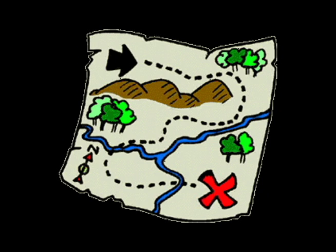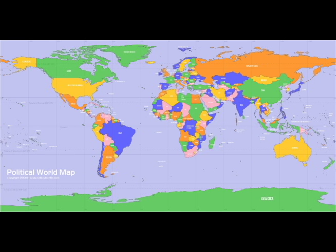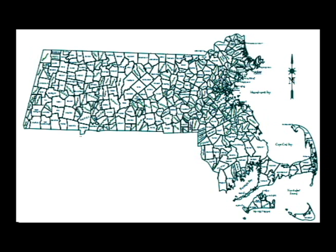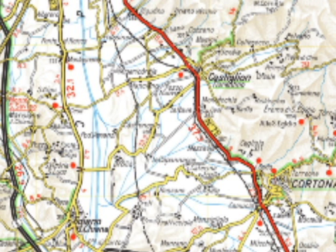In geography, there are three main categories of maps. When we know what category a map is, we can decide if it will be suitable for our use. Political maps show how humans divide up the earth — they show borders between countries, cities and towns. That's why we call it political. Political maps can also show building sites, neighborhoods, and settlement plans.